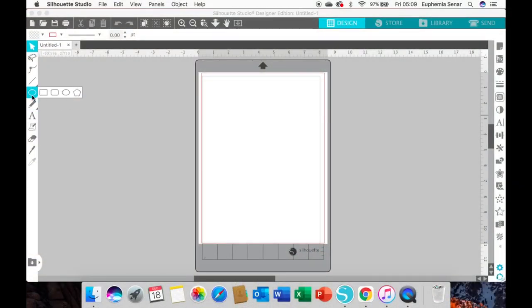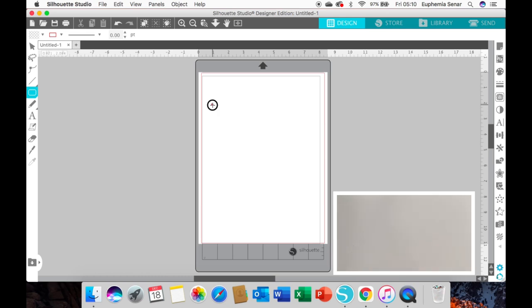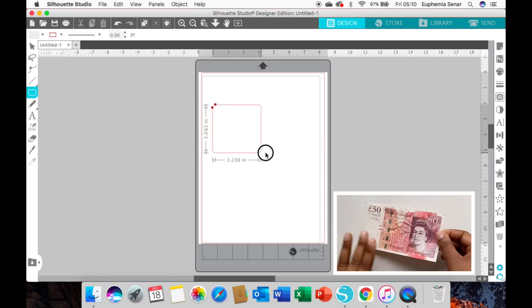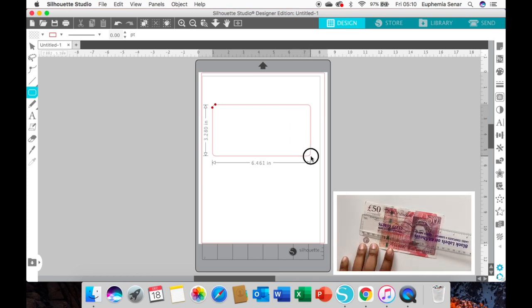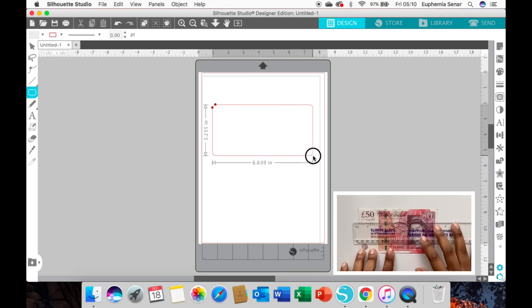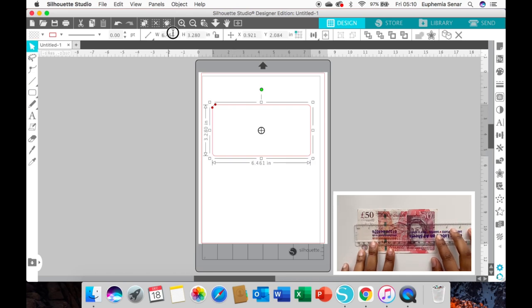Okay, so I'm in my Silhouette design software and I'm creating my outline for my envelope. I've already measured a 50 pound note, which is the largest denomination in my country, so my outline needs to be a minimum of this size. I've measured it to be 6.5 inches by 3.5 inches.